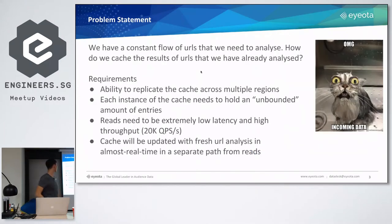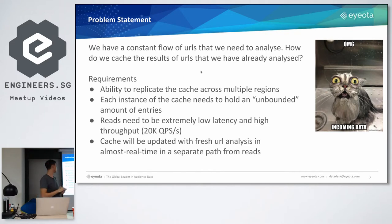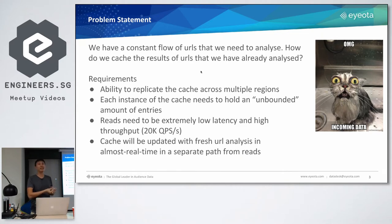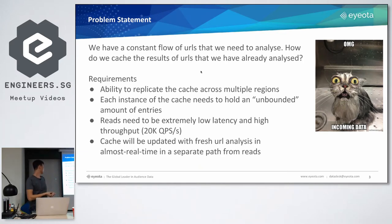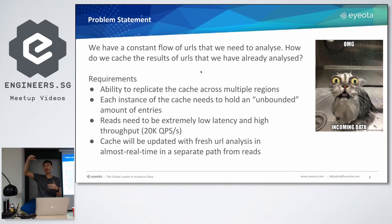Let's start with the problem statement for this disk cache. We have a constant flow of URLs that we need to analyze, and we need to cache the results of these URLs. We have a requirement to replicate this cache across different regions, and each instance of this cache has to hold an unbounded amount of URLs — unbounded in the sense that we need to store as many as possible within resource constraints. We need to be extremely low latency and have very high throughput, expecting about 20,000 queries per second. This cache will be updated with fresh URL analysis in almost real time on a separate path — on one hand queries come in, and on the other hand updates come in post-analysis.